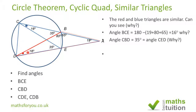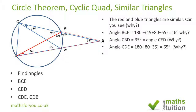Next we want to find angle CDE. CBED is a cyclic quadrilateral, and because of that, opposite angles add up to 180. So to get angle CDE, we do 180 minus 35 minus 80, and that gives us 65 degrees.